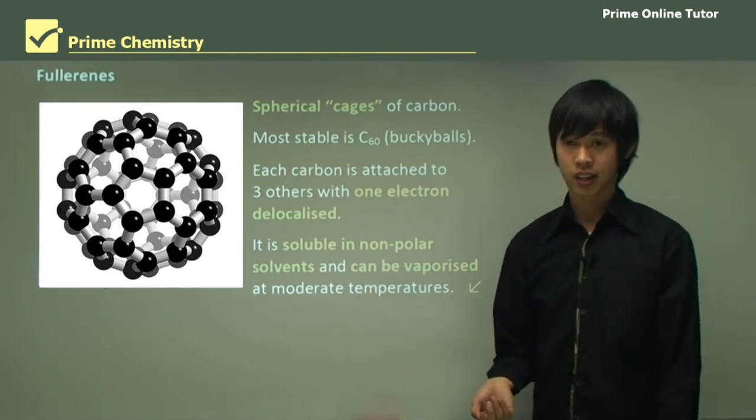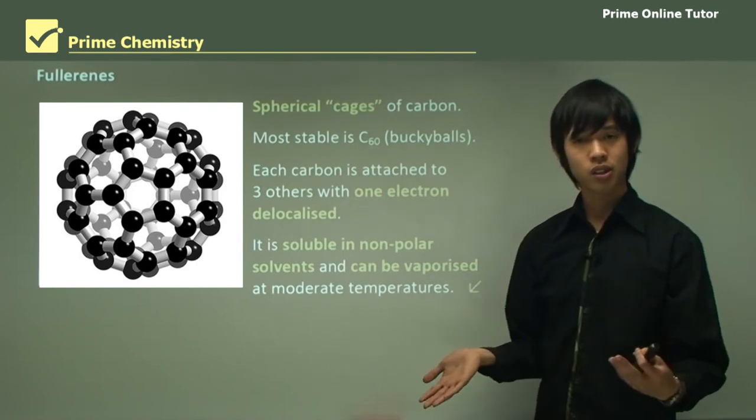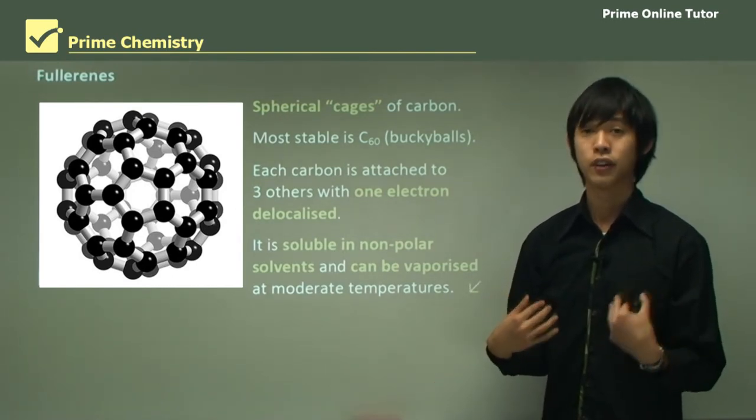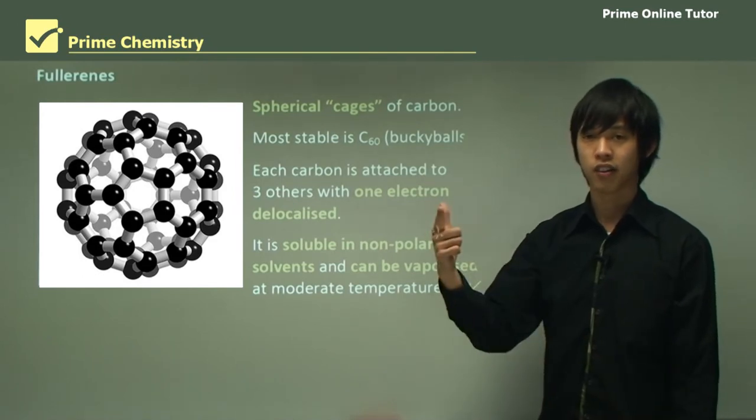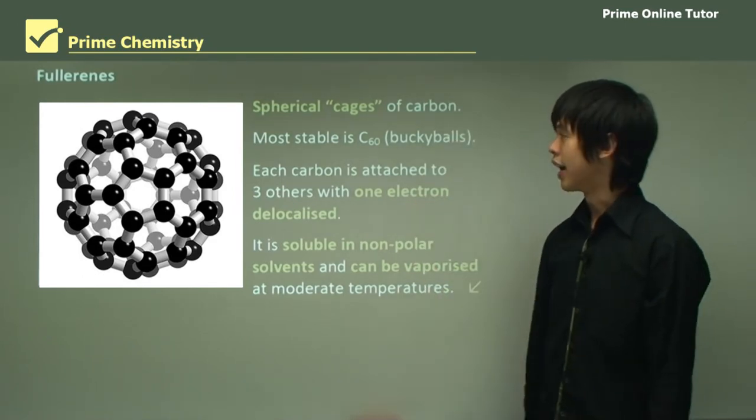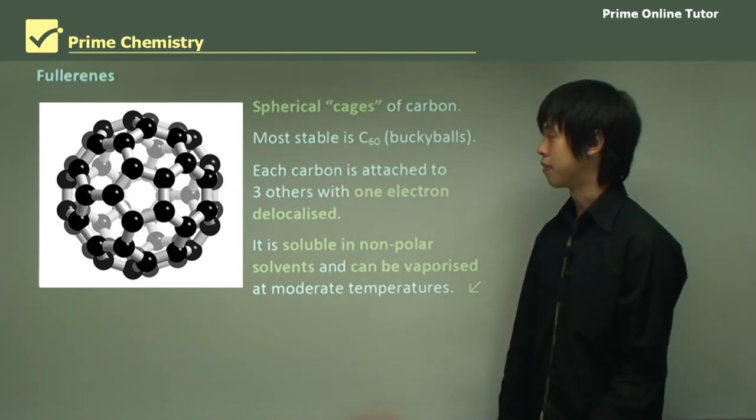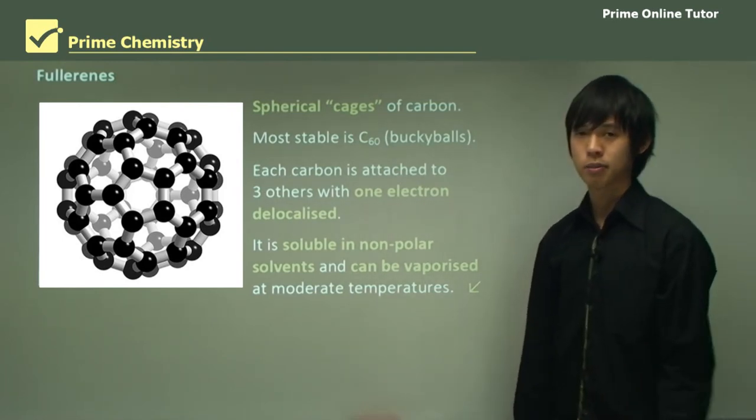So that wraps up the theory today on carbon and its allotropes. We learned what an allotrope was and then we learned about the three major types of allotropes of carbon: diamond, graphite, and fullerenes. We'll move now to the question section and hopefully you'll remember some of the things that we talked about in today's lesson.